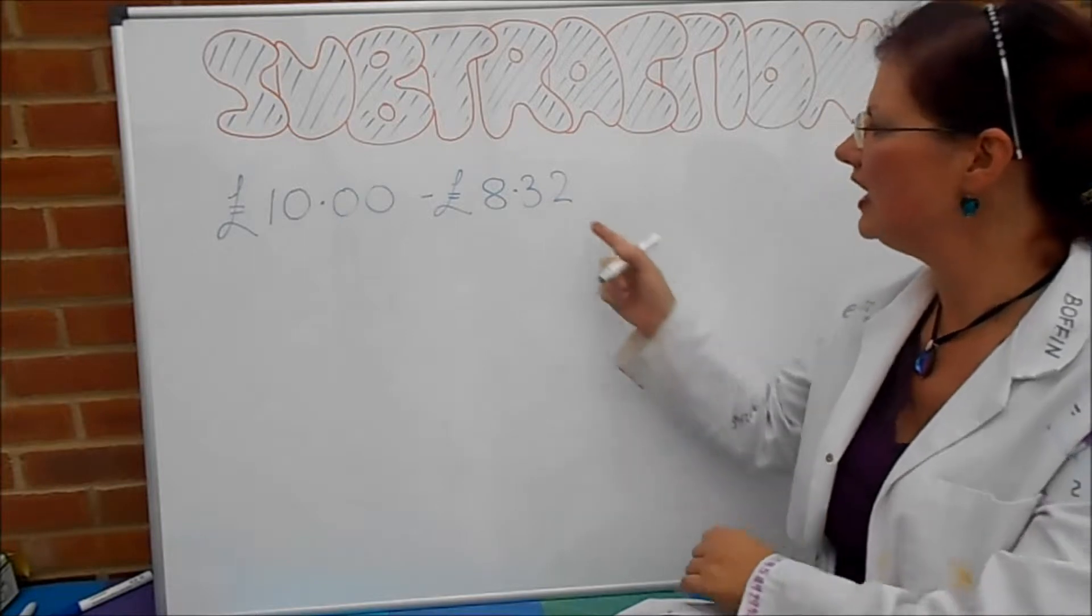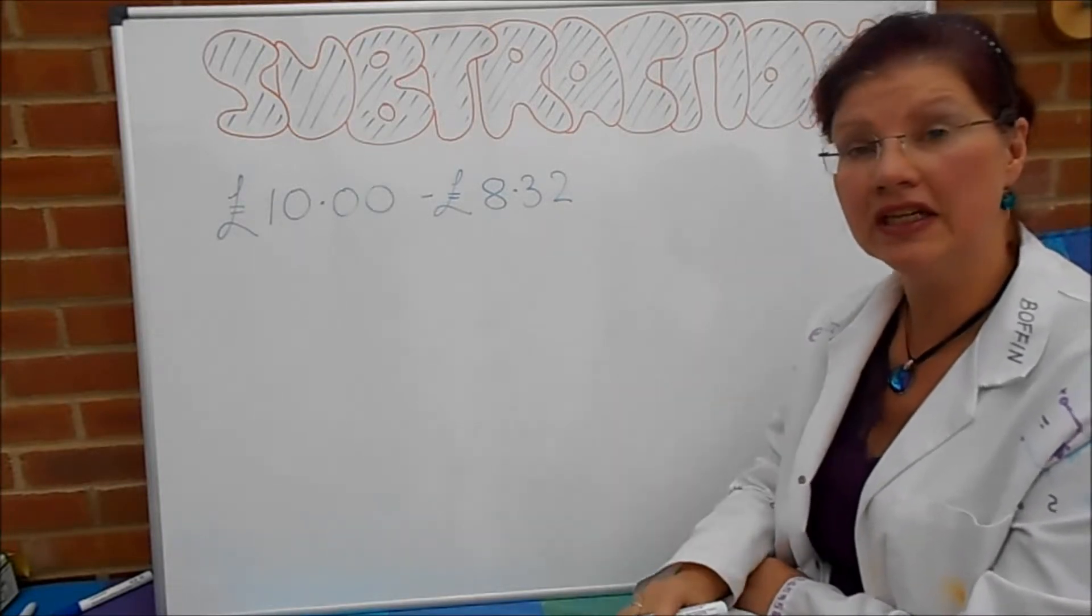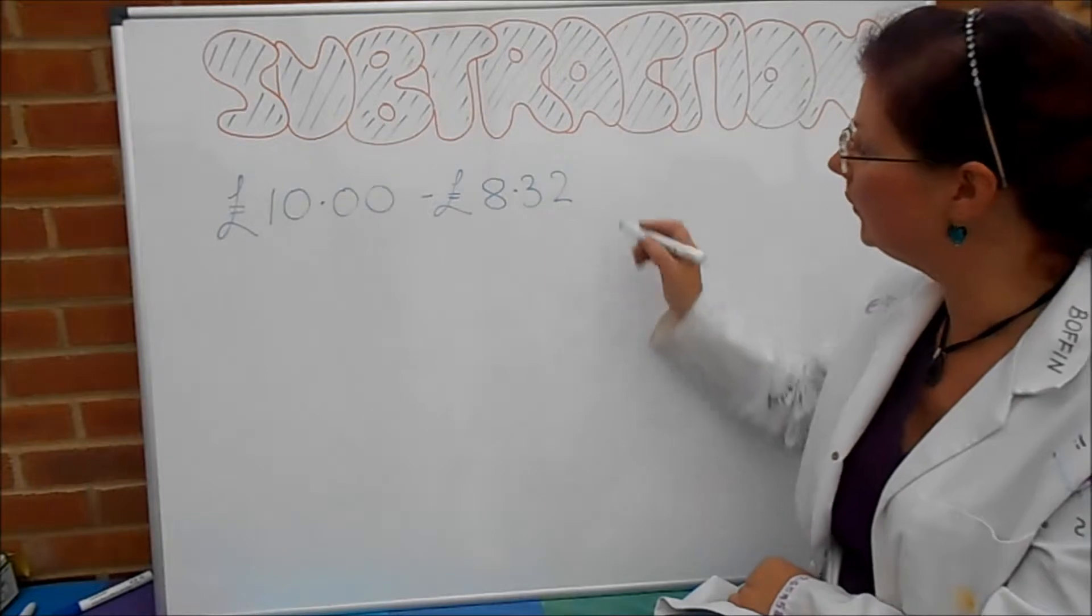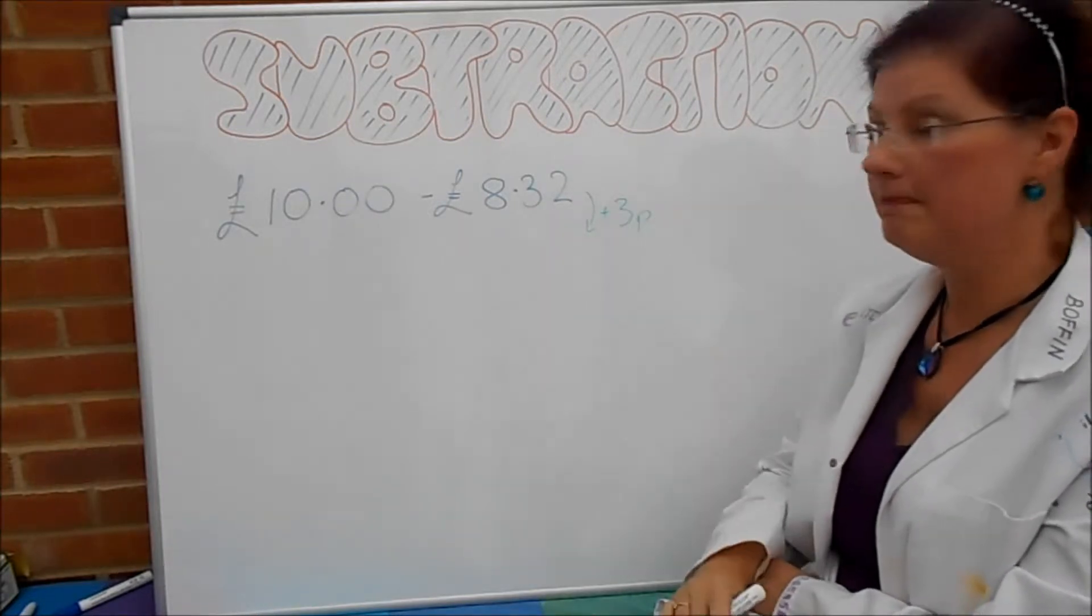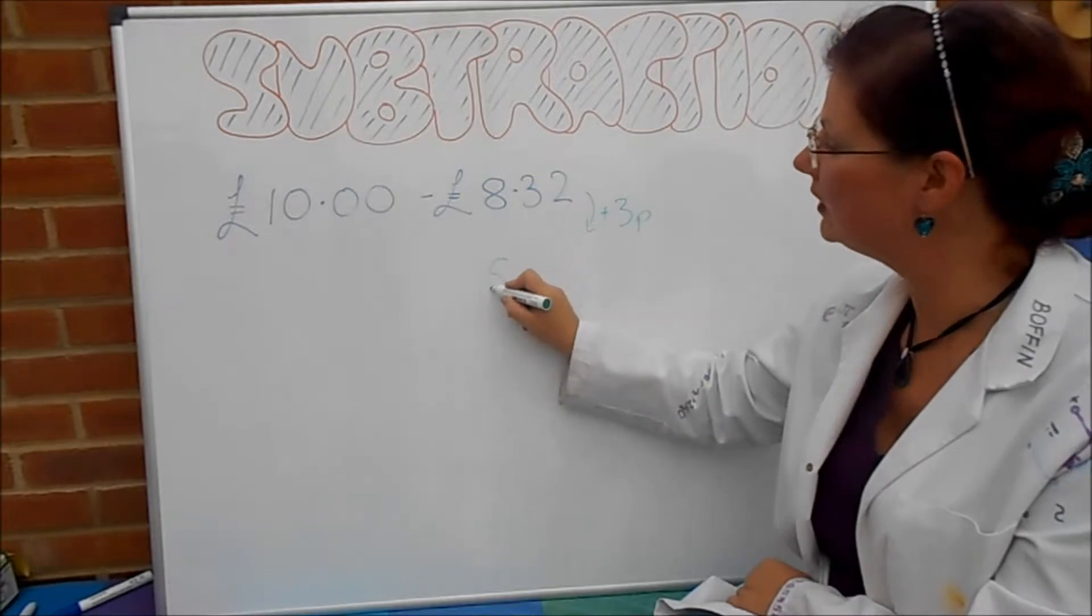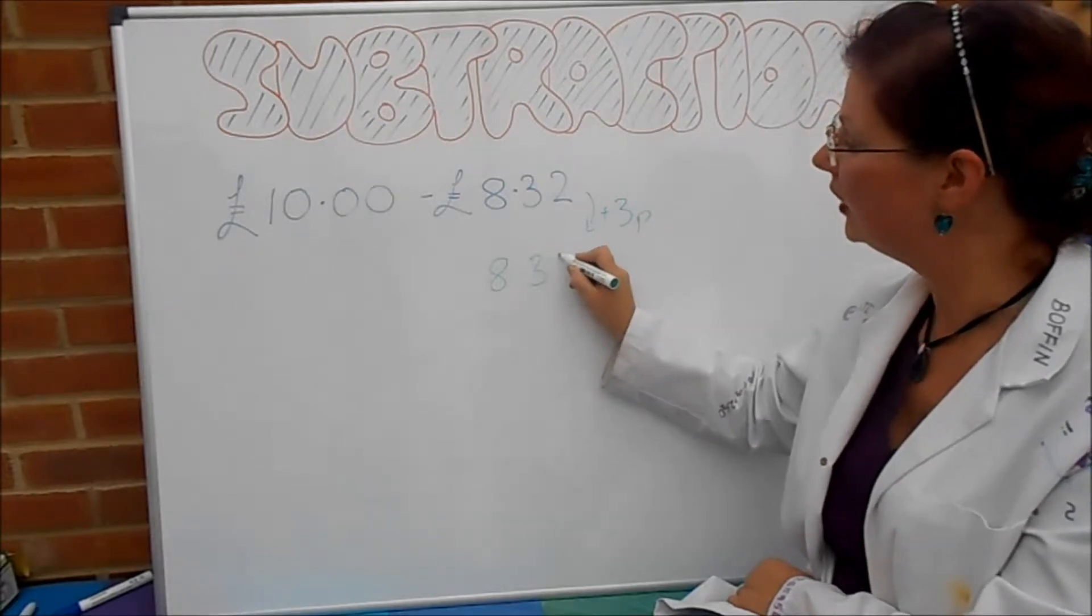Well, I'm going to add on, you could add on another 3p to take it up to £8.35 if you like, so we could certainly do that. I'm going to add on 3p and that would give me a total of £8.35.